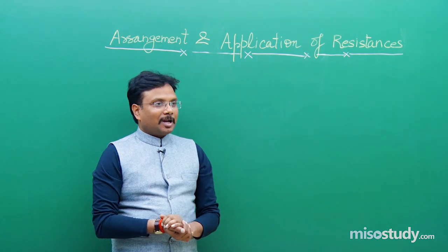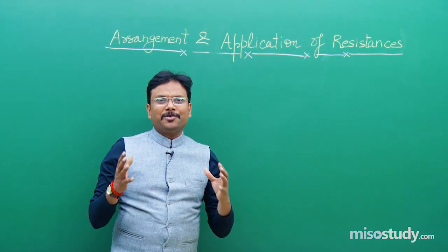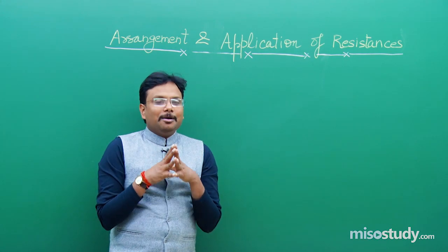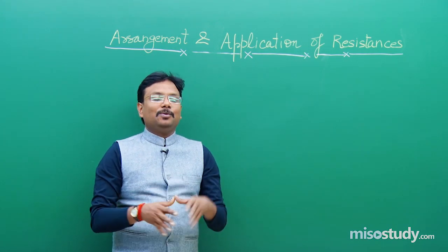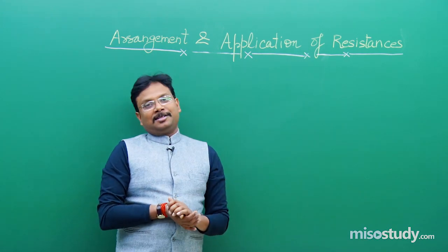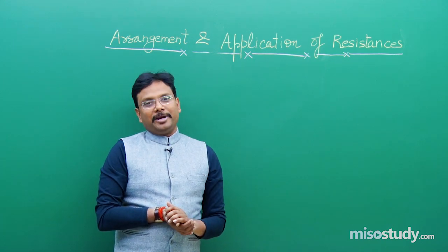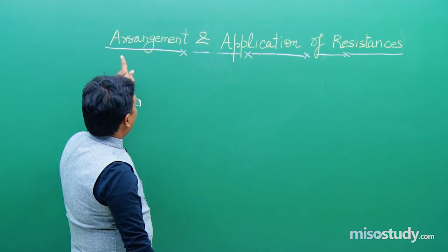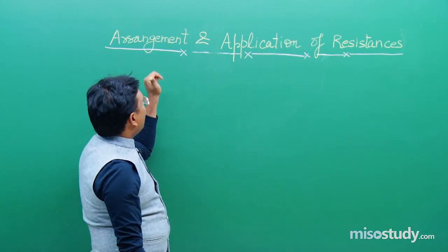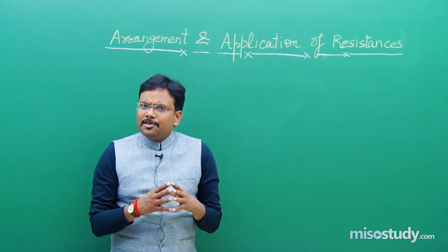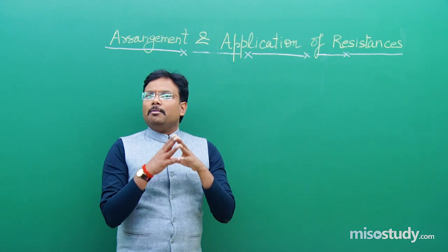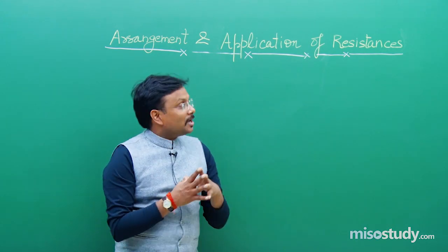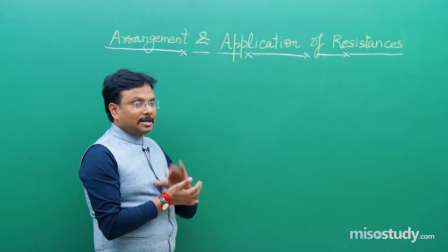I just want to elaborate how you can calculate the final resistance with various types of combinations. I thought let us mention this heading — arrangement means maybe series, maybe parallel, maybe mixed also — and application.